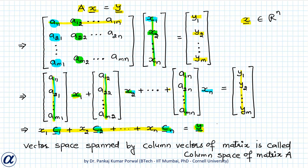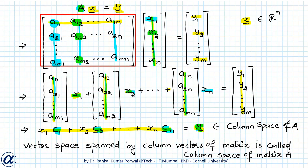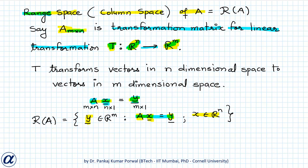So vector y belongs to the column space of A. If the rank of matrix A is R, then the number of linearly independent columns in A is also R. Since the column space is spanned by these column vectors and there are R linearly independent columns, the dimension of the column space of A equals R — because the dimension of a vector space is the smallest number of linearly independent vectors spanning that space. And since the range space of matrix A is the same as the column space of A, the dimension of the range space of A also equals R.